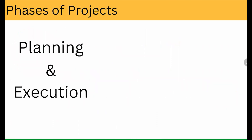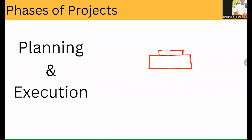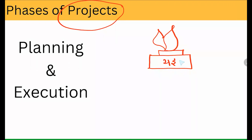In today's master class, let's first understand what are the phases of the project. Any project which is taken up — देखिए, आपने Hindu mythology में — इस concept को वहाँ से समझेंगे. Basically it is very simple. अगर आप project का मतलब देखें — यज्ञ. In English it is called as Yajna. What is a Yajna? एक Yajna एक process होता है.